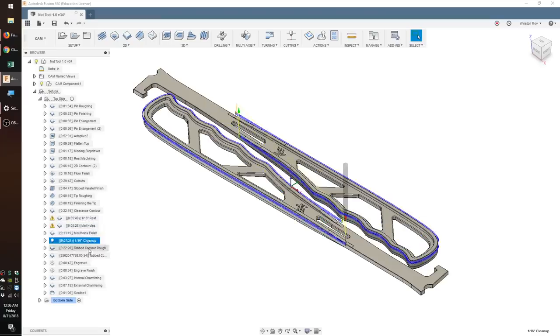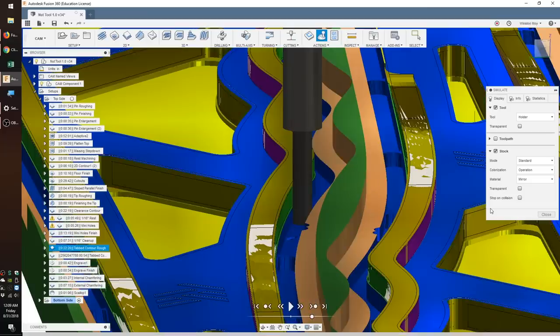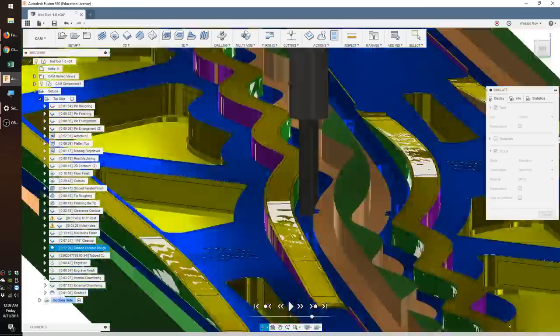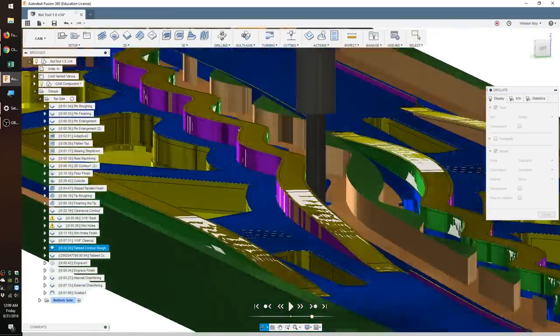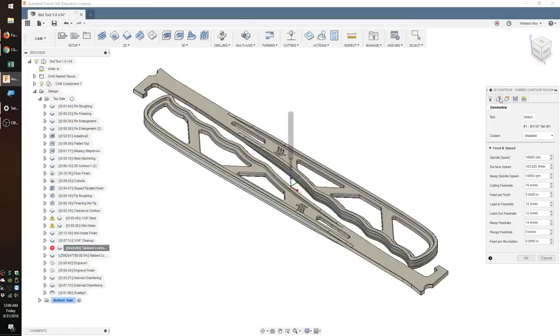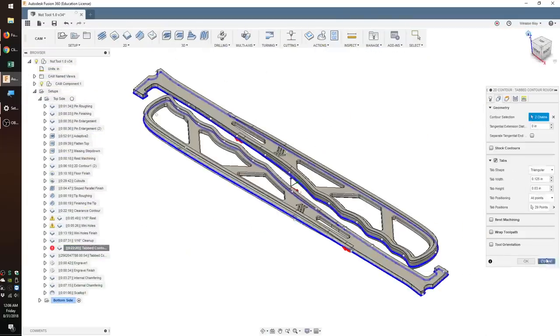Next, I would come in with a one sixteenth inch end mill to cut out everything the eighth inch couldn't get to. Then, I would continue my cutout contour to the halfway point of my stock. Since the eighth inch tool had cleared a wide, shallow channel already, only a very short length of my one sixteenth inch end mill needed to be in contact with the aluminum on both sides. For this contour, I would sprinkle in a generous amount of tabs.